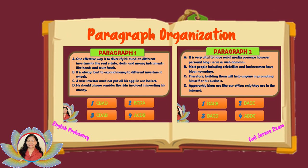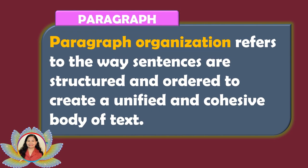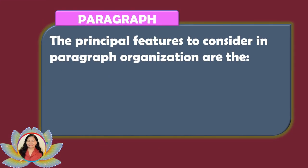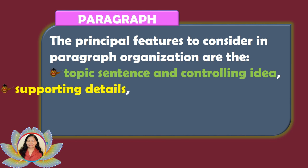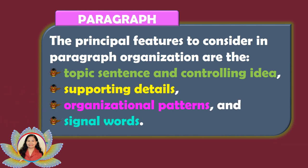Many of us struggle when it comes to paragraph organization and reading comprehension tests because of the numerous texts we need to read. However, if we know the structure of the paragraph, it will be easy for us to organize and answer the questions correctly. Paragraph organization refers to the way sentences are structured and ordered to create a unified and cohesive body of text. The principal features to consider are the topic sentence and controlling idea, supporting details, organizational patterns, and signal words. Together these features develop a topic and connect ideas logically and fluidly.